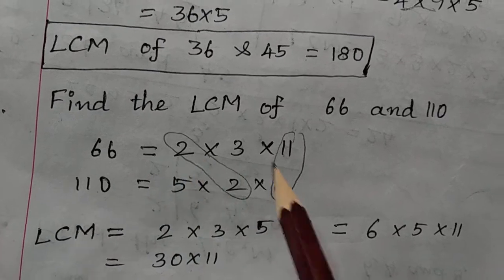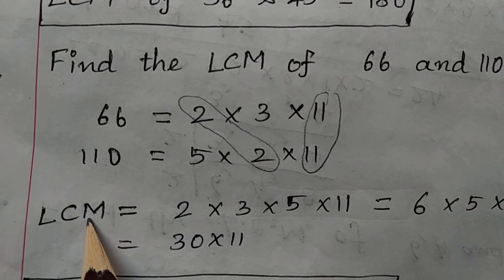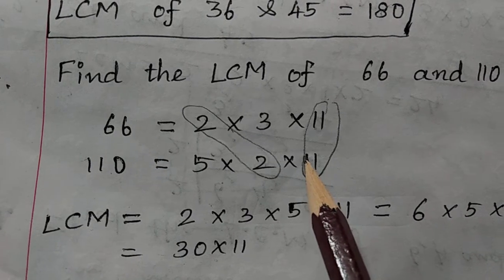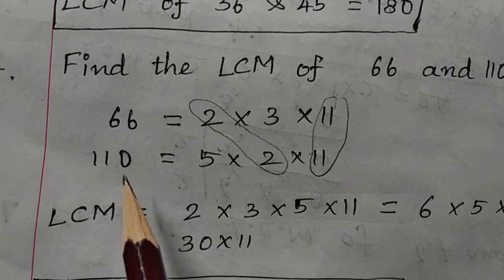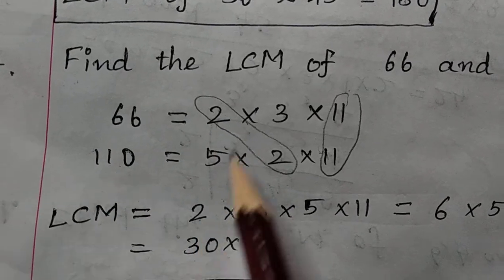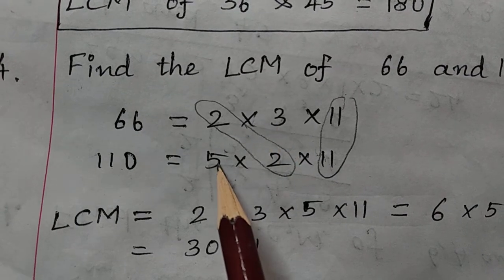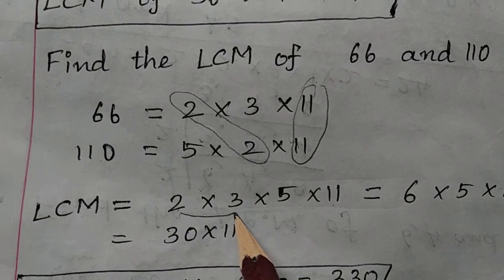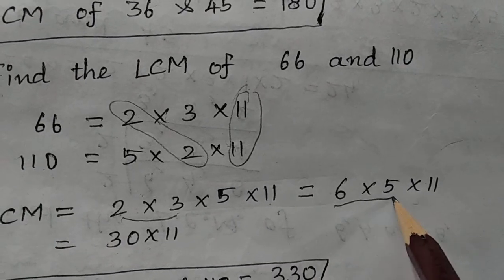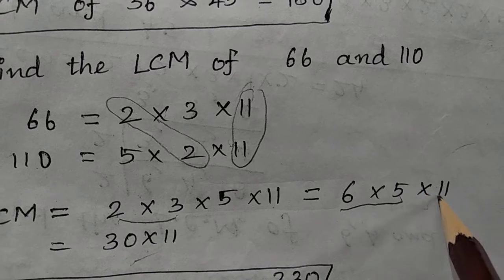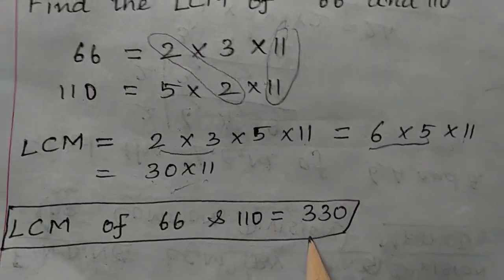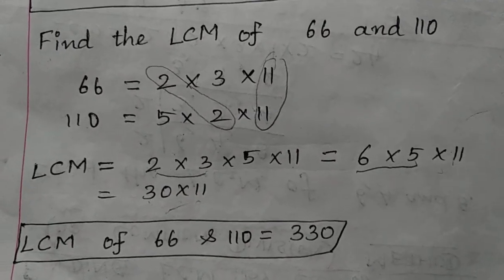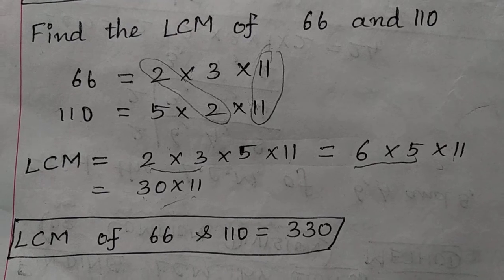We have expressed both numbers as products of prime factors. 2 and 11 are common to both 66 and 110. Common factors are written only once. So LCM = 2 × 3 × 5 × 11. 2 × 3 = 6, then 6 × 5 = 30, then 30 × 11 = 330. LCM of 66 and 110 is 330.